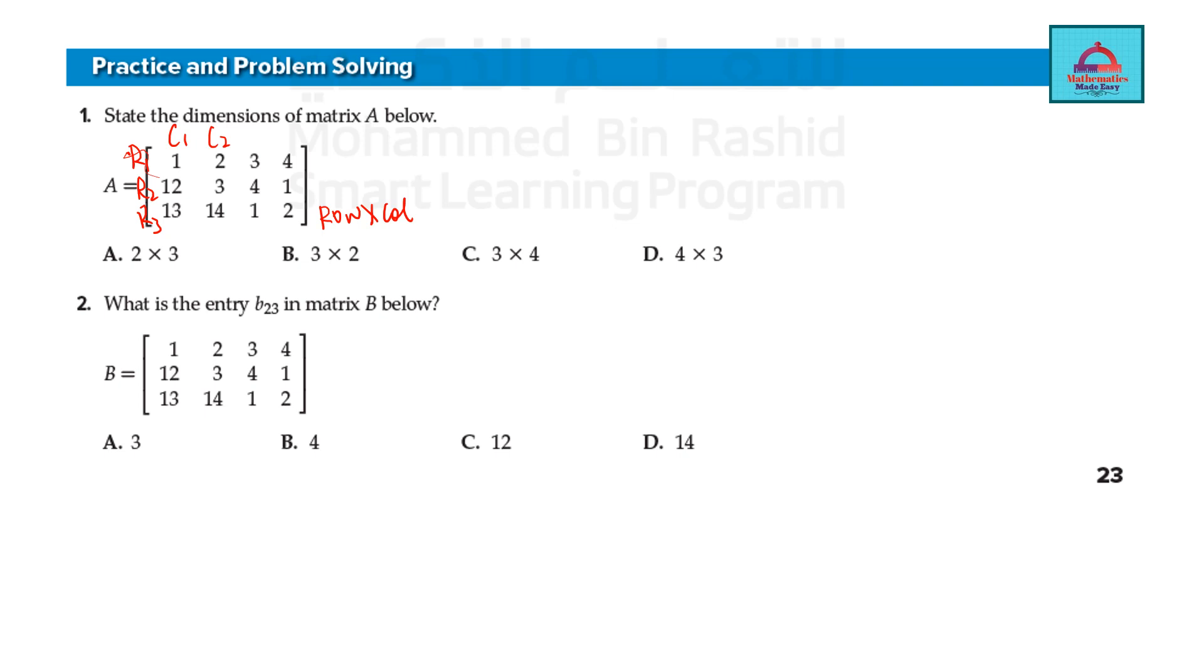C1, C2, C3, C4. Remember rows are horizontal going from left to right and columns are vertical going from up to down. So there are 3 rows and 4 columns. The dimensions will be 3 cross 4 or 3 multiplied with 4. So C is the answer.